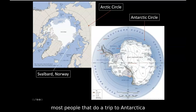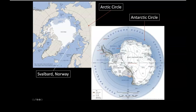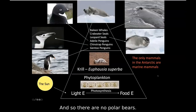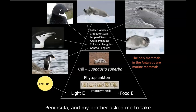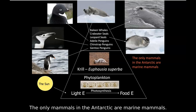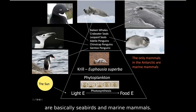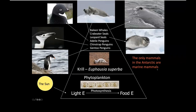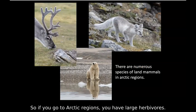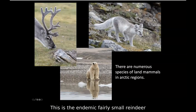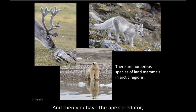There are no polar bears in the Antarctic. When I went to the Antarctic Peninsula, my brother asked me to take pictures of polar bears — well, there aren't any. The only mammals in the Antarctic are marine mammals, so your top predators are seabirds and marine mammals. In the Arctic, by contrast, you have large herbivores like the endemic Svalbard reindeer, small predators like the Arctic fox, and the apex predator — the world's largest mammalian predator — the polar bear.